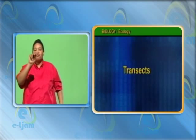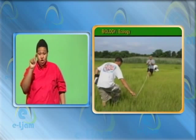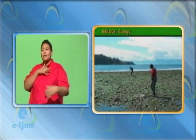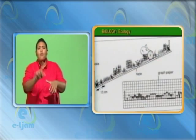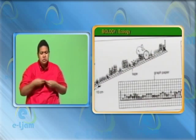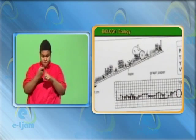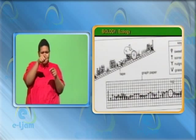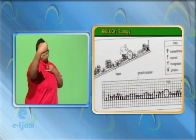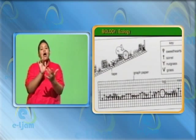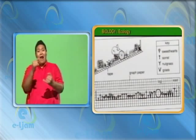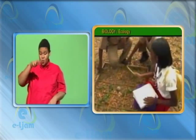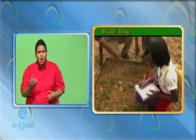Using a transect requires sampling along a straight line. The line transect is useful for sampling habitats where there is a clear change in conditions and distribution of vegetation or animals from one point to another. A length of cord with marked intervals is stretched over a habitat and any plant touching the cord is recorded. This may be done for the entire length of the cord or at regular intervals. The quadrat may be used to calculate species density and species frequency.